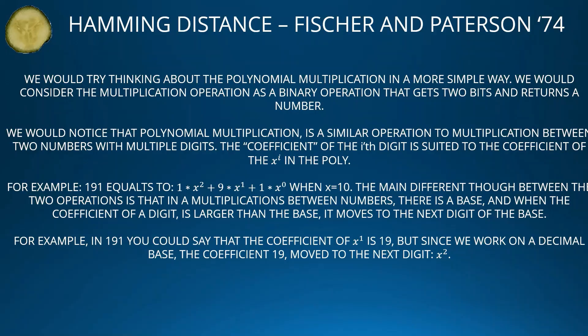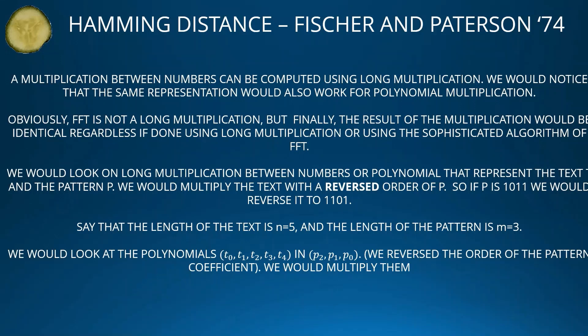The main difference between the two operations is that in number multiplication there is a base, and when the coefficient of a digit is larger than the base it carries over to the next digit. For example, in 191 you could say the coefficient of x¹ is 19, but since we work in decimal (base 10), the 19 carries over to x². Multiplication between numbers can be computed using long multiplication, and the same representation works for polynomial multiplication. FFT is not long multiplication, but the final result is identical regardless of whether long multiplication or FFT is used.